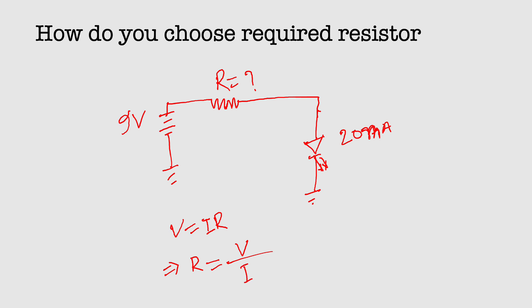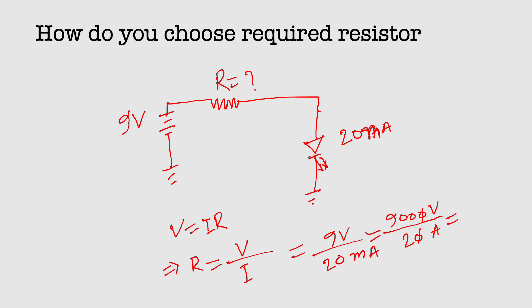R is equal to V divided by I, which is 9 volt divided by 20 milliampere. You can write this as 9000 divided by 20, which gives 900 divided by 2, which is 450 ohm. So you need a resistor value of 450 ohm.